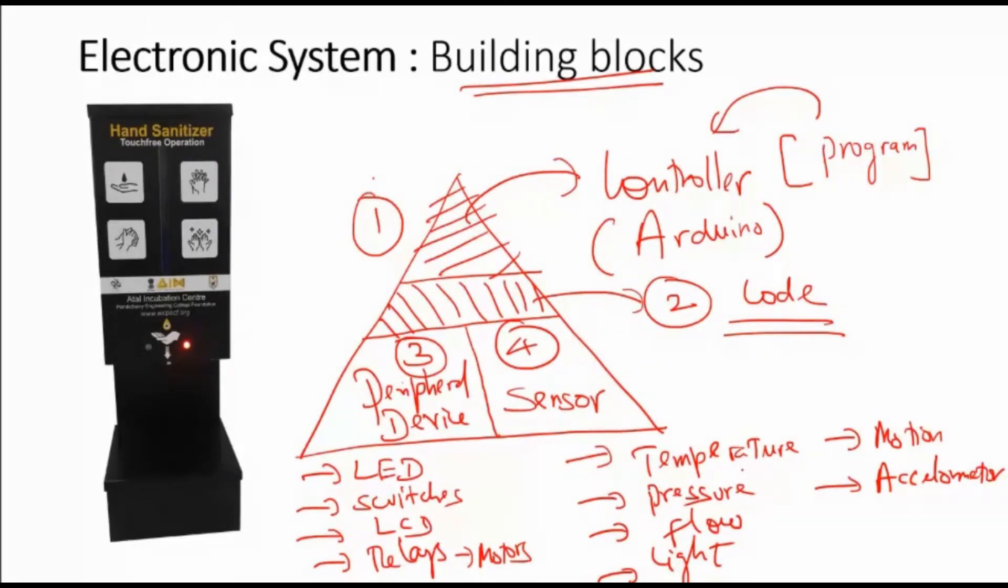Each sensor can measure or sense a particular physical parameter, be it light or temperature or sound, whatever it is. So putting it all together, you form an electronic system. So if you take an electronic system, you have four blocks. One is a controller.